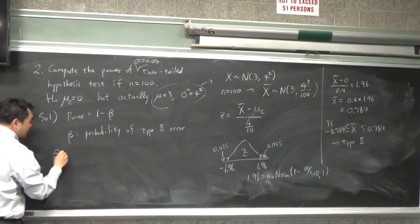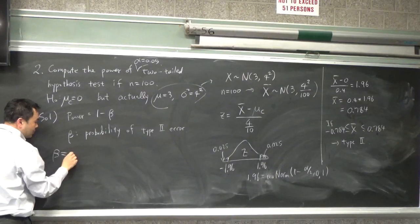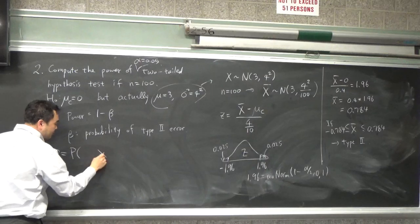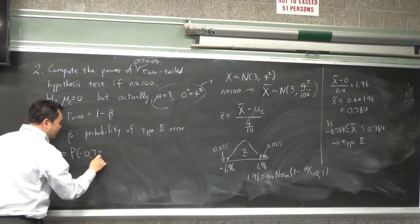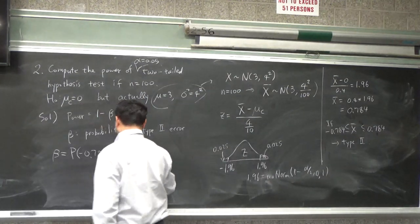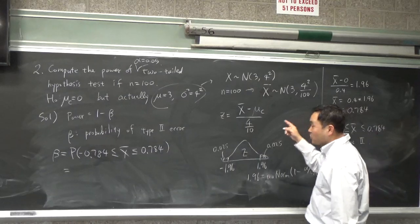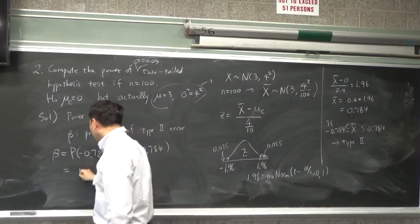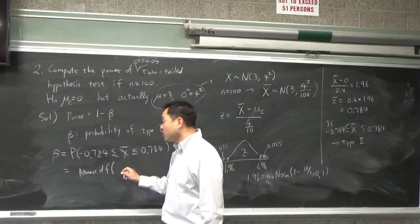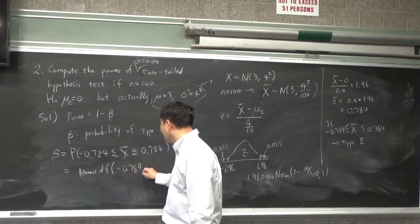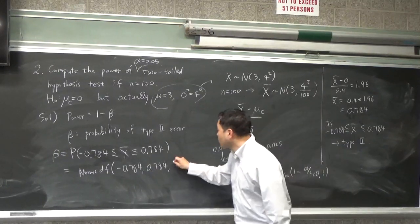So beta is the probability that x bar would be between negative 0.784 and positive 0.784. And because we have a calculator to help with this, we can just say norm CDF, just put the two endpoints as negative 0.784, positive 0.784. Average is 3, okay?